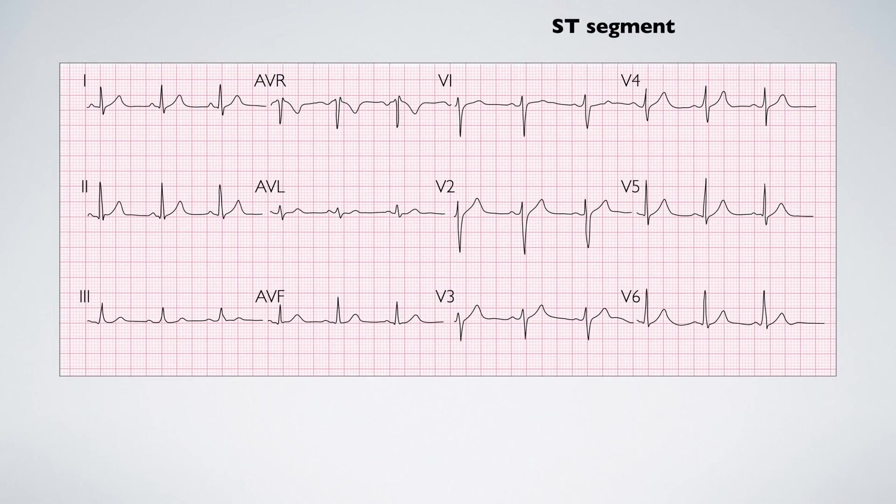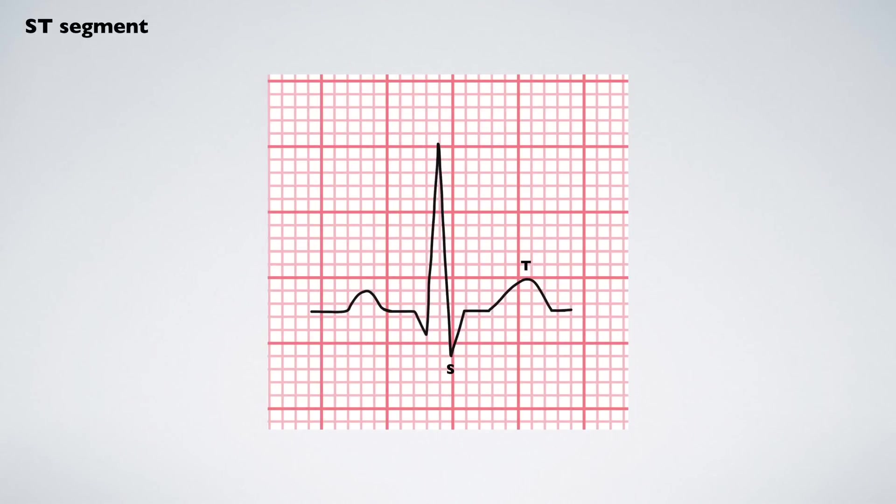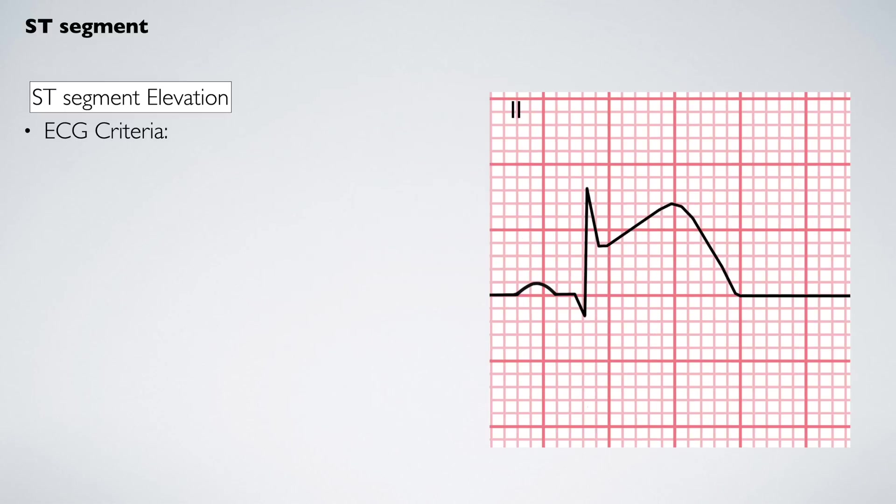Now we move on to the ST segment. Scan all territories of the ECG looking at the anatomically grouped leads: inferior, septal, anterior and lateral views. The ST segment is usually flat, but elevation or depression is measured at the J point. ST elevation is significant if it is greater than one small square in two or more anatomically grouped leads.